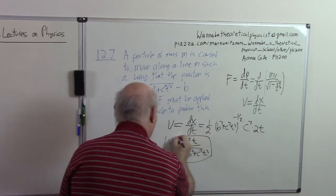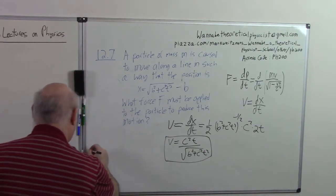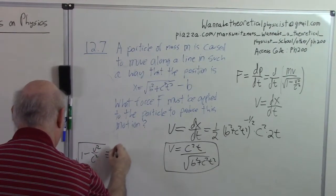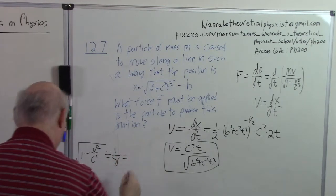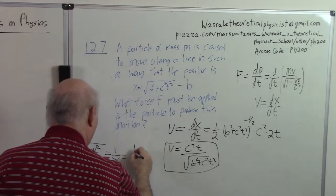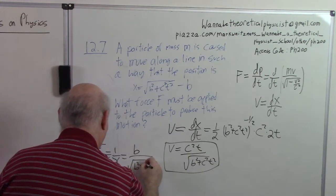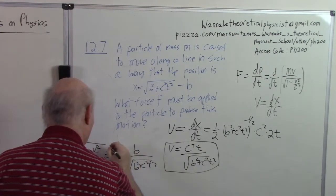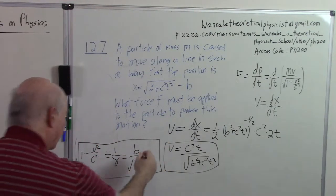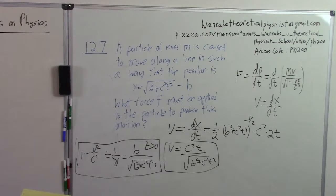We'll need that a couple of places. And using this I can get the square root of one minus v squared c squared, which is defined as one over gamma. And this will be equal to, just plugging in this in here, it's just routine algebra, it's equal to b over the square root of b squared plus c squared t squared. So this is the second routine thing I need. I assumed here that b is greater than zero.